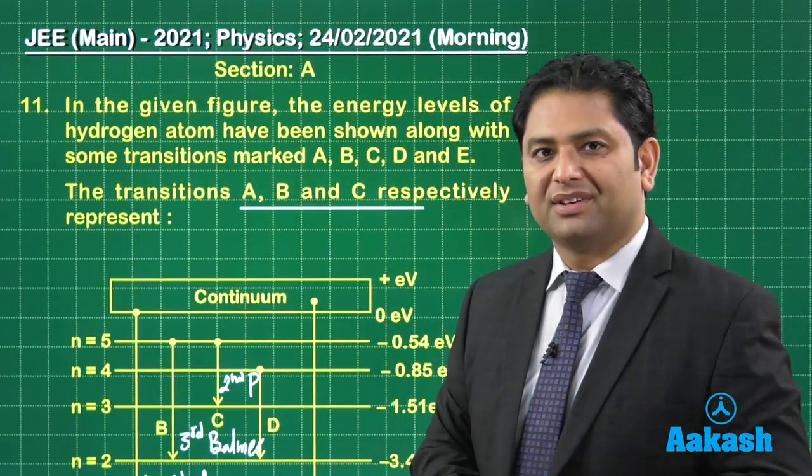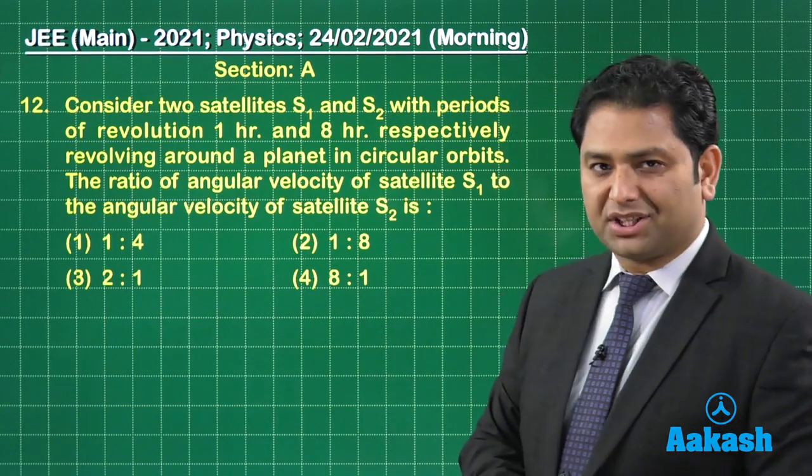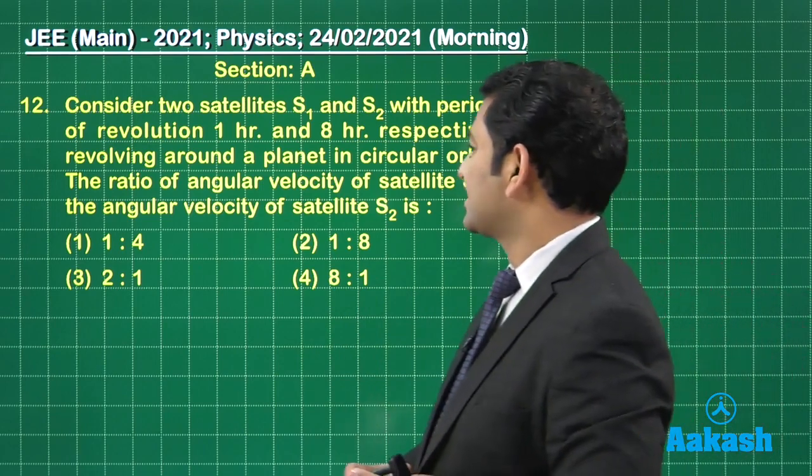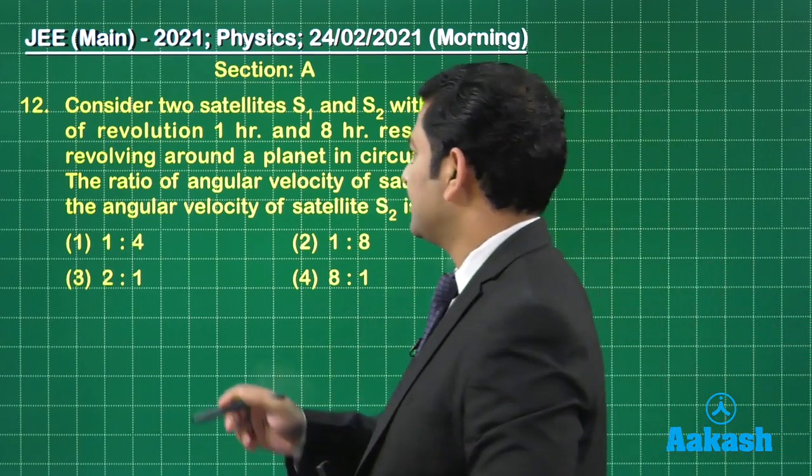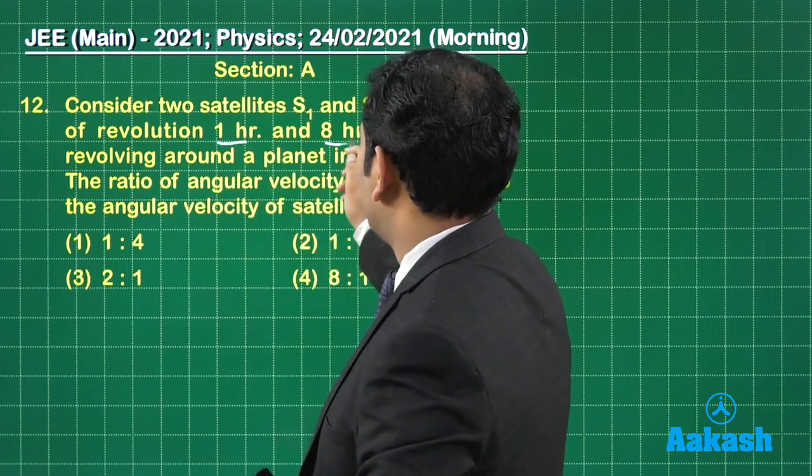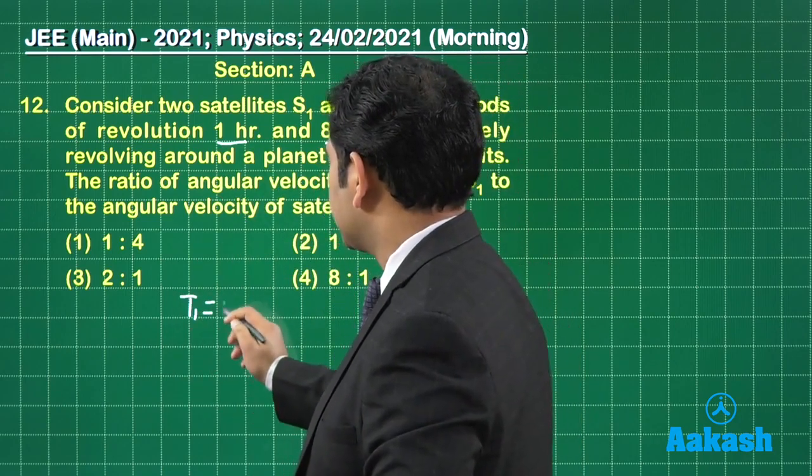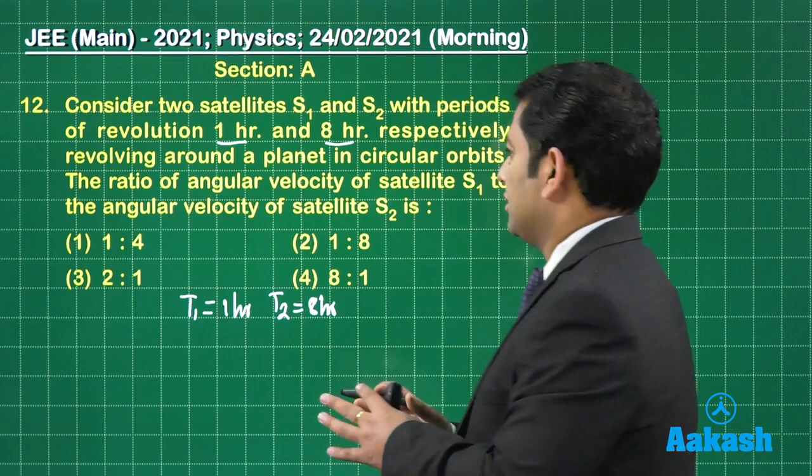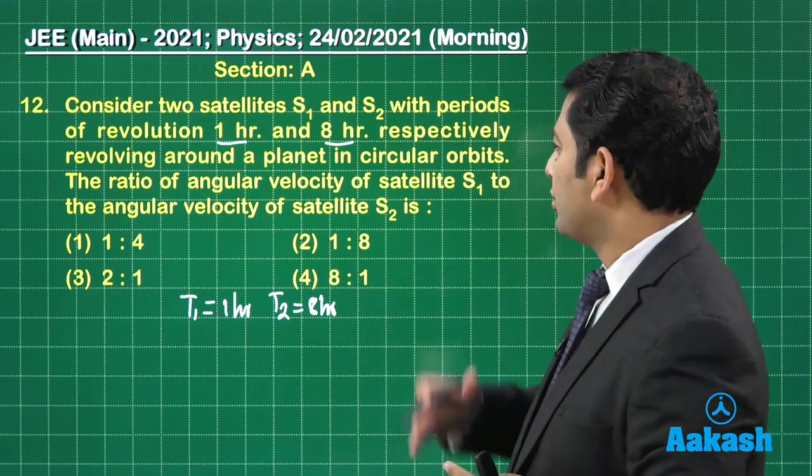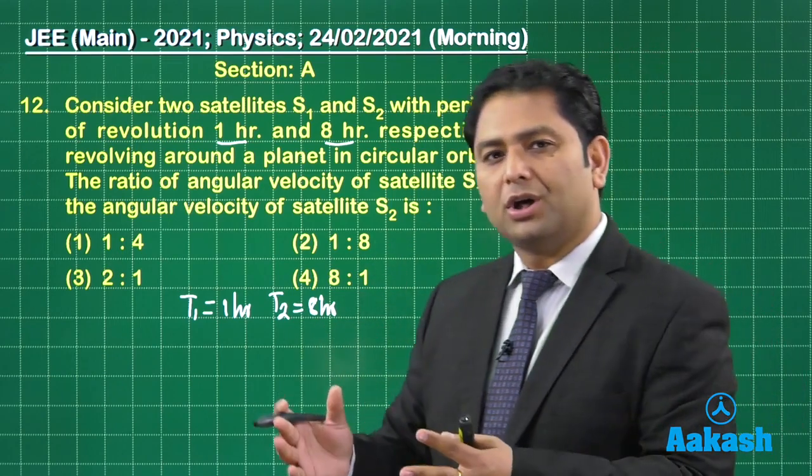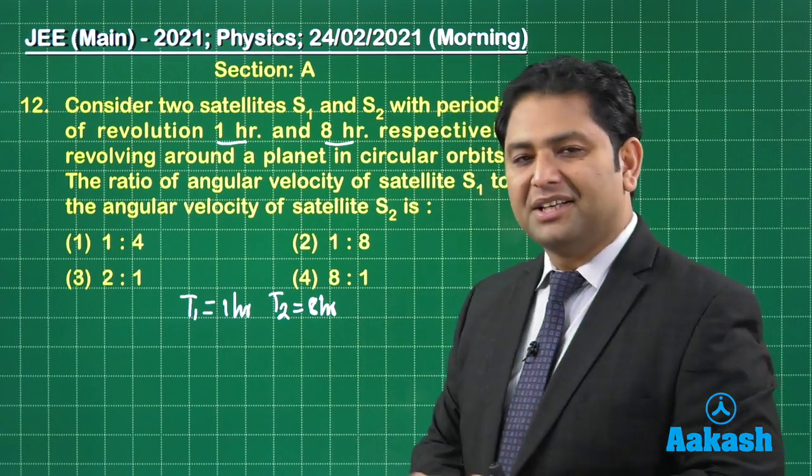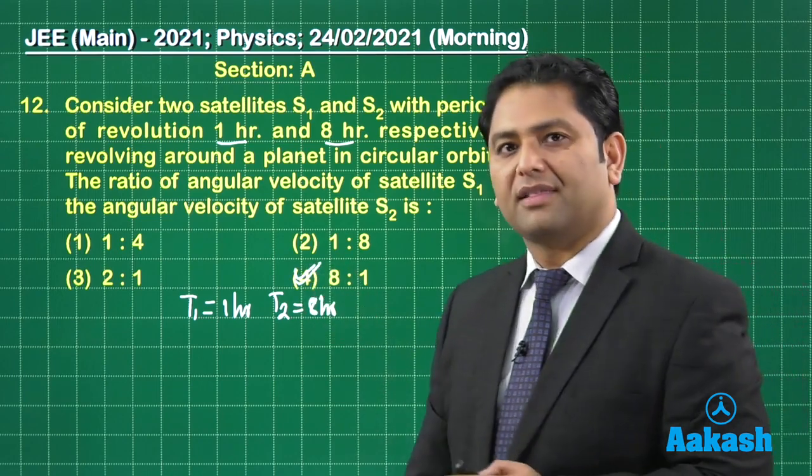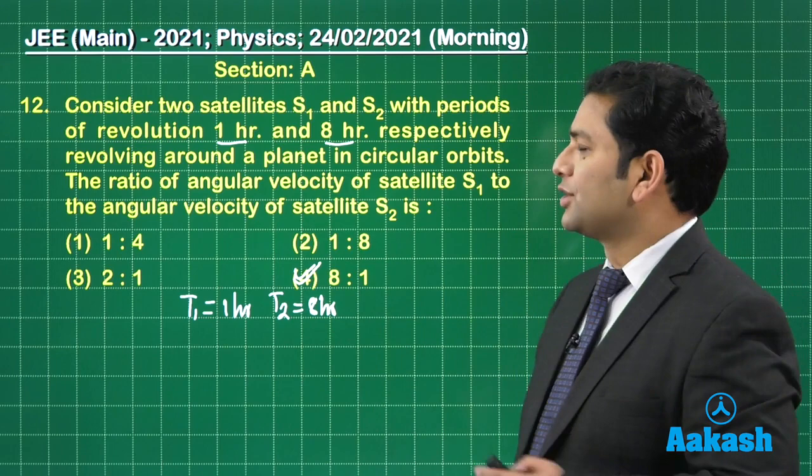Let's go to question number 12. Question number 12. Gravitation. One. But a very, very straightforward one. There are two satellites and the time periods. They are in the ratio. You could see one is to eight. The time period of one is one hour. The time period of two, that's equals to eight hour. And we got to find the ratio of the angular velocity. Now you know omega is two pi by time period. So omega would be inversely proportional to time period. So option number four, that would be the correct one.